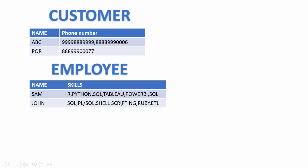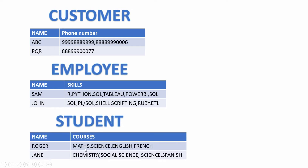We have an employee table where an employee can have multiple technologies as a skill set. And we have a student table which contains the details of the courses the students are pursuing. Now imagine if I have to write a query to list the number of students enrolled for a particular course, or how many employees possess the skill set SQL. Well, it can be fairly challenging with this table structure.